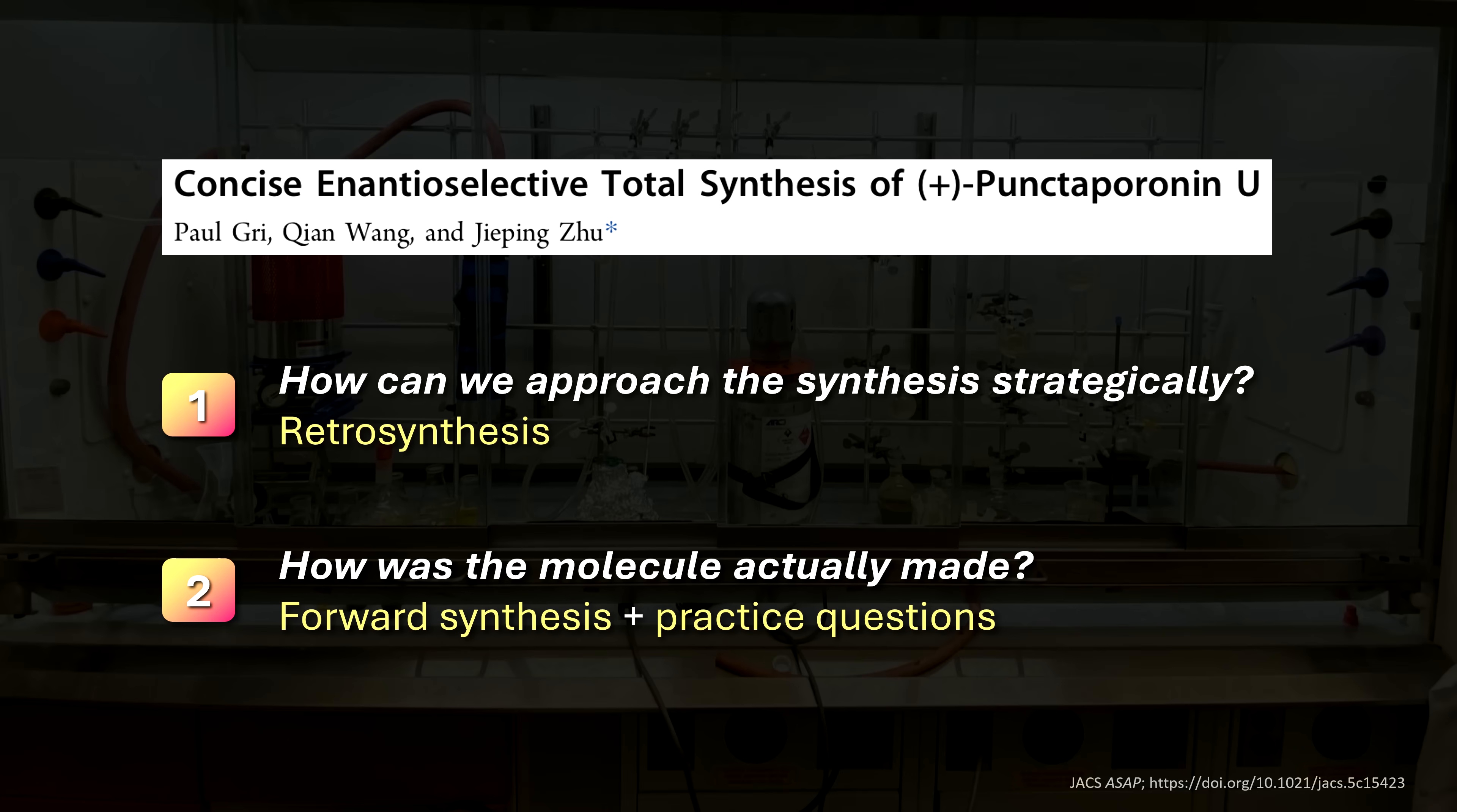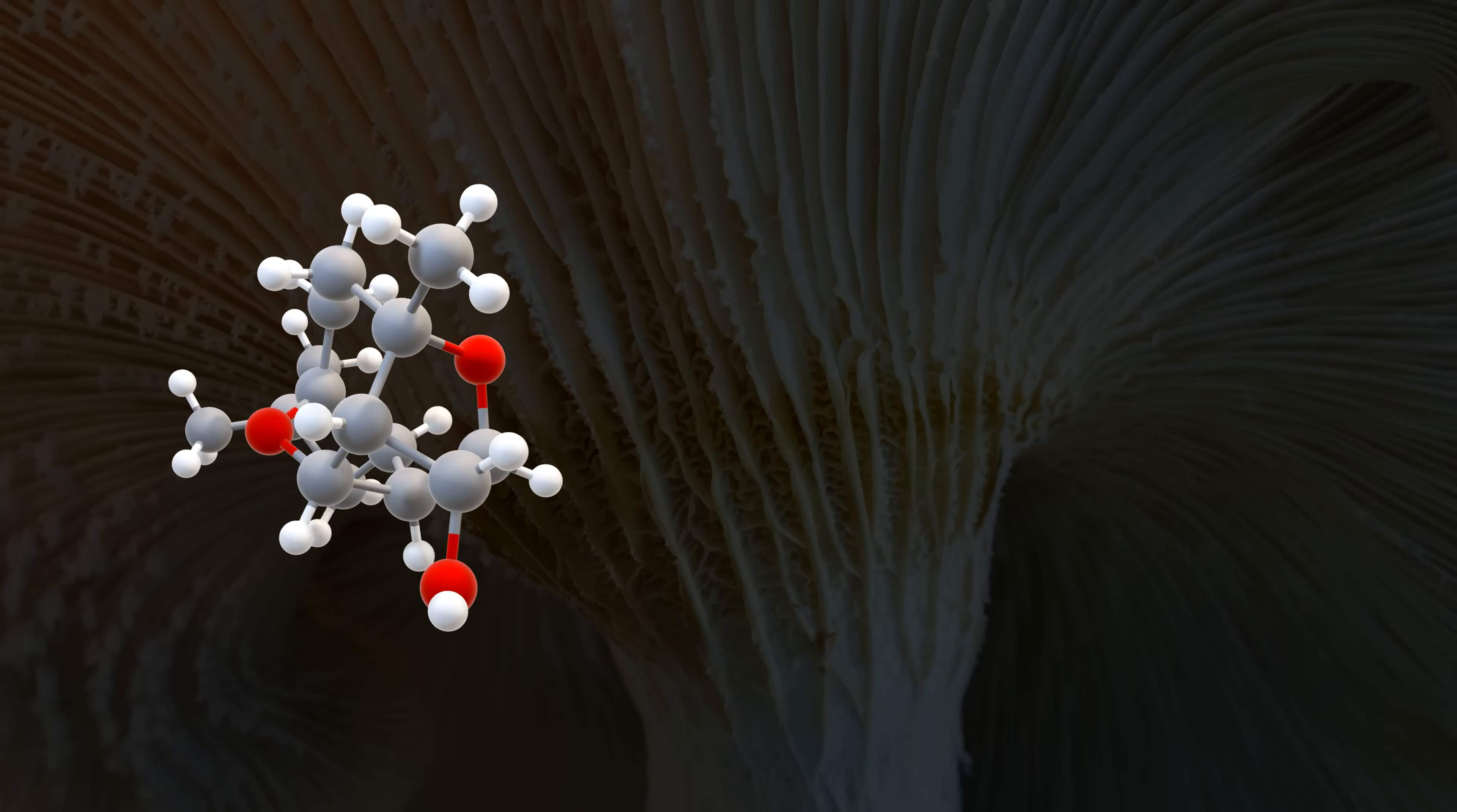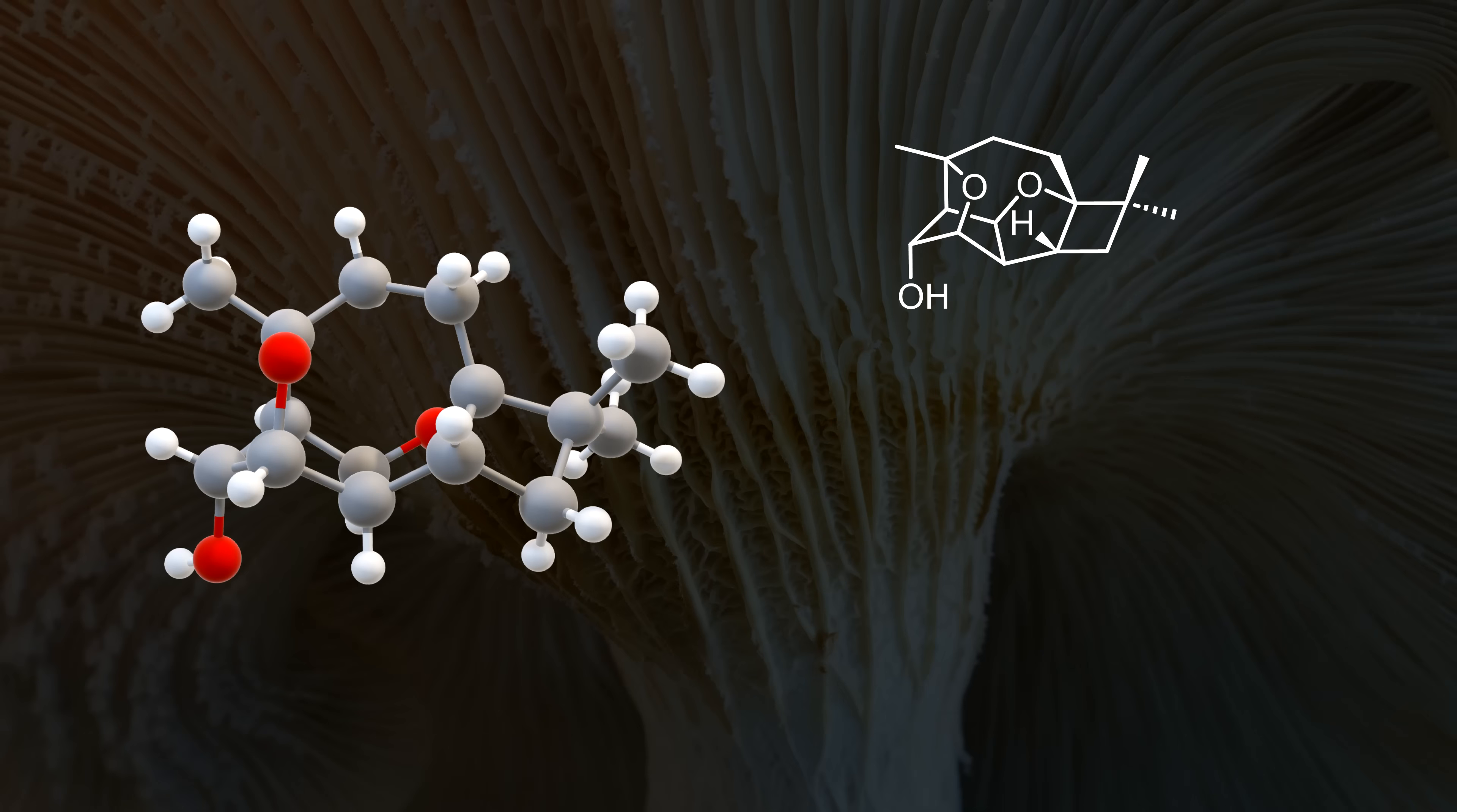We're going to cover the full range of seemingly easy transformations like SN2 to stereoselective cascade reactions. So, no matter who you are, you're going to learn something today. Before blindly reviewing reactions, we first need to think about the retrosynthetic logic. So, working backwards from our final molecule where the first disconnection corresponds to the last synthetic step in the forward sense.